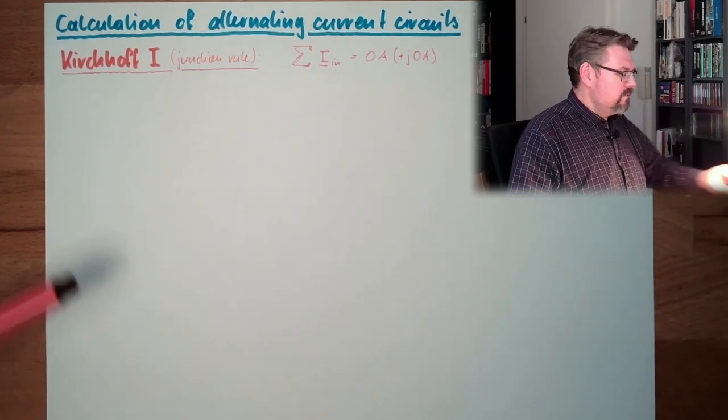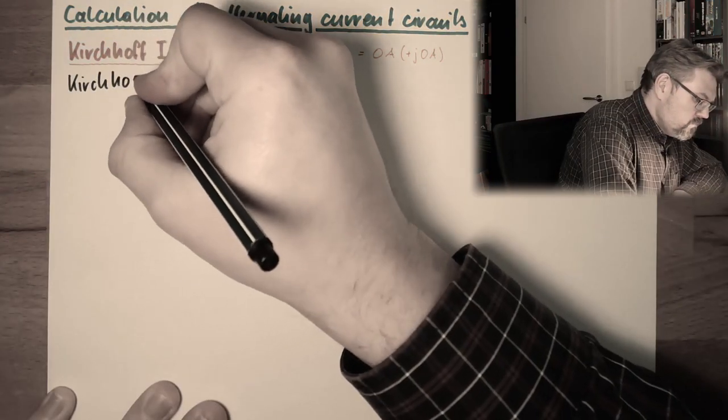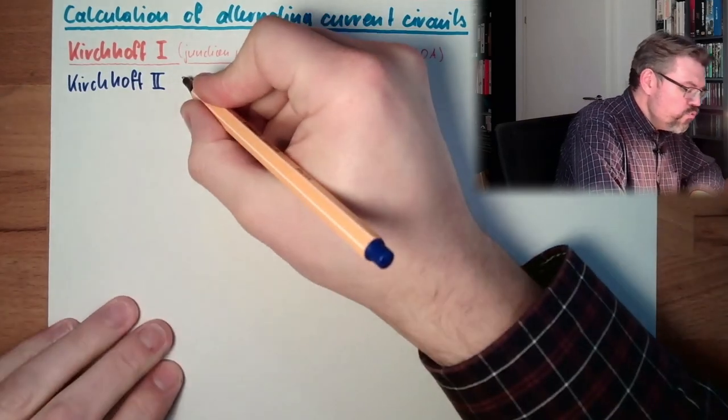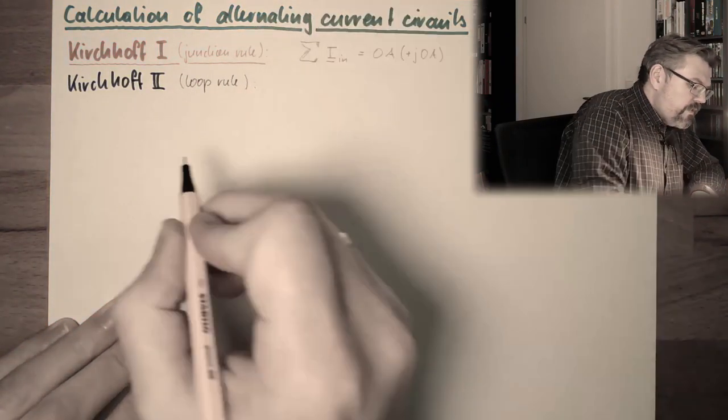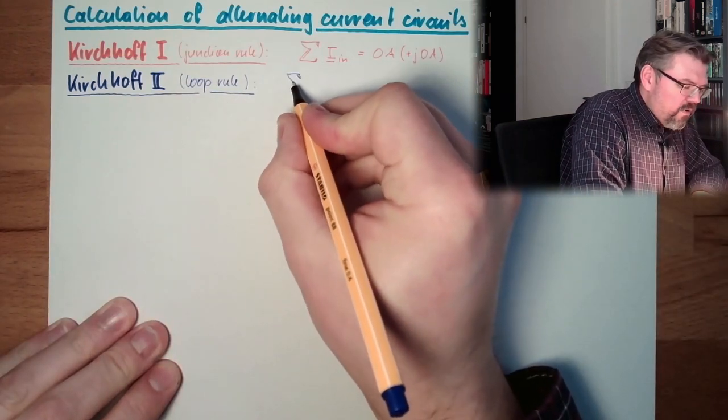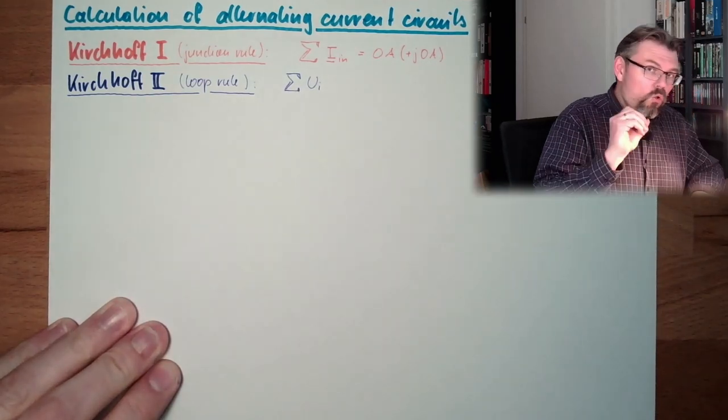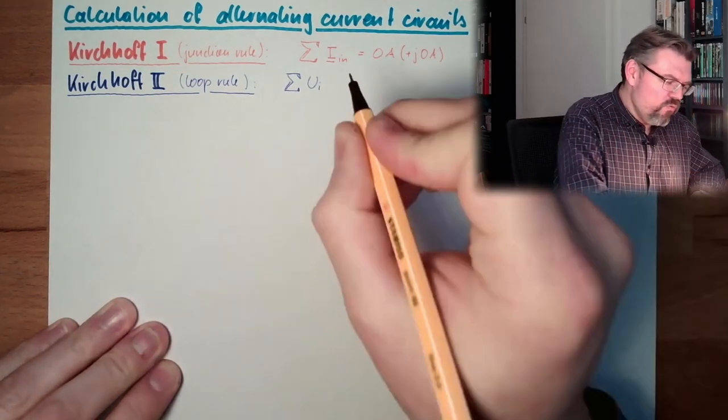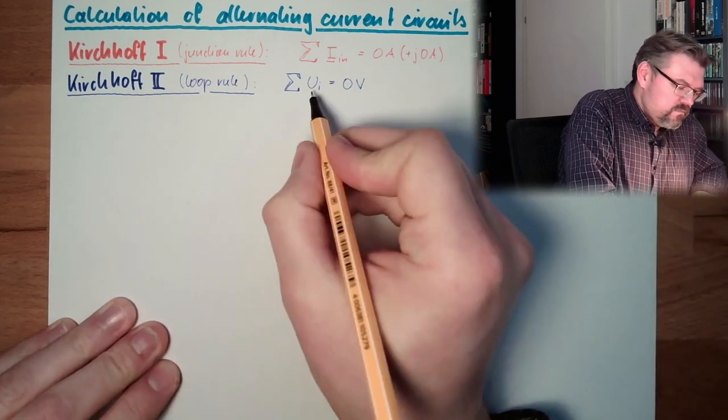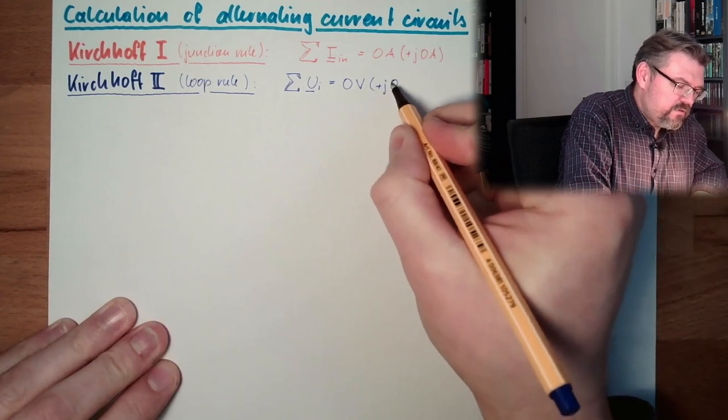Kirchhoff 2, this was the loop rule. It was written as the sum of all voltages in a loop equals zero volts. And now, extension plus J zero volts.